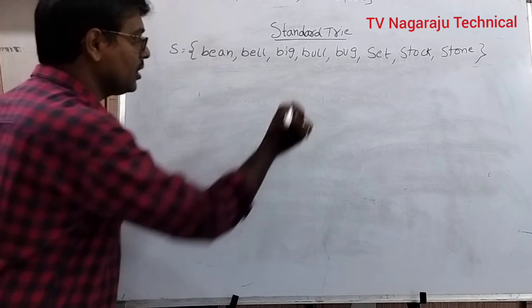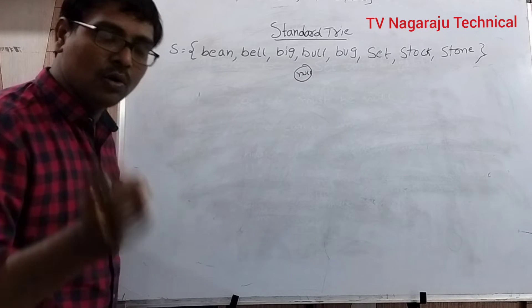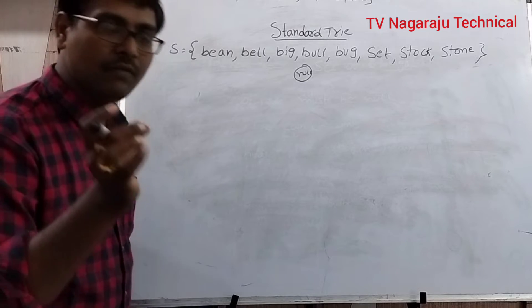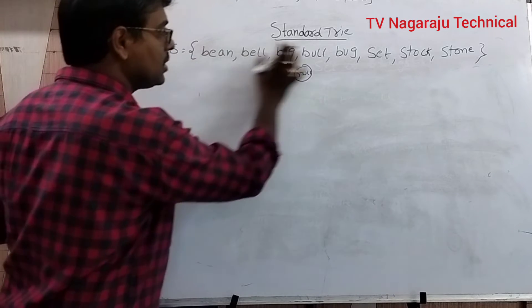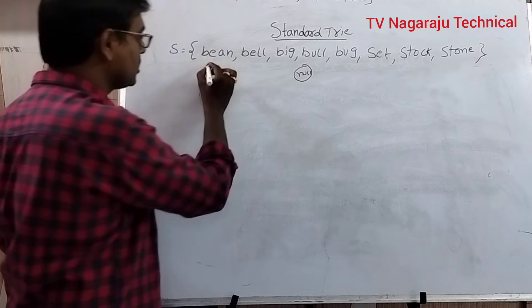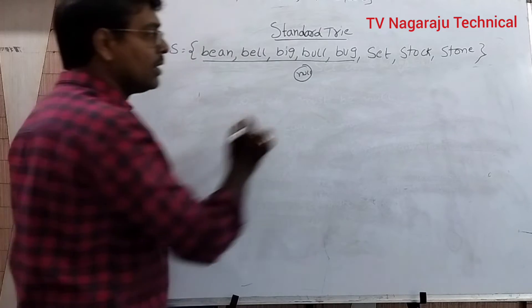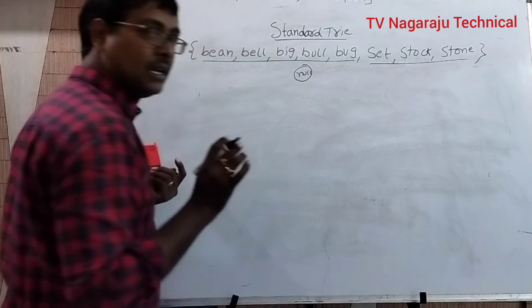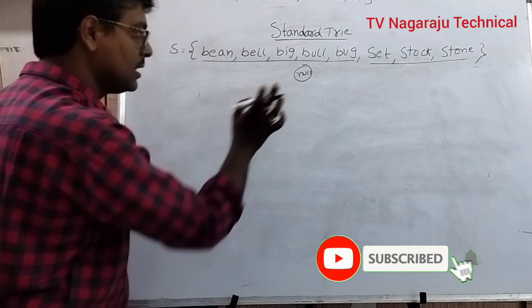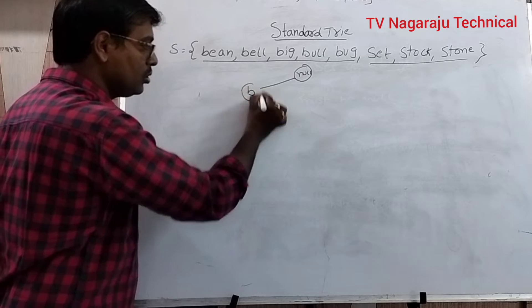Now let us discuss how to construct the trie. The root node is null. Observe the set of strings — what are the starting letters? Some strings start with B, and some start with S. That means there are only two different starting letters, so the root node contains only two children: B and S.